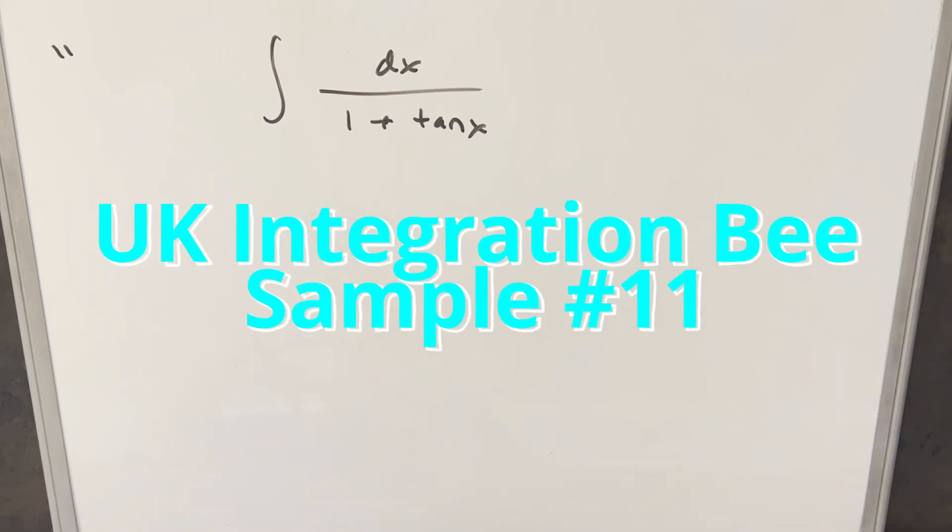Okay, we have another integral. This one's from the UK integration B, problem 11. We have the integral of 1 over 1 plus tan x dx.